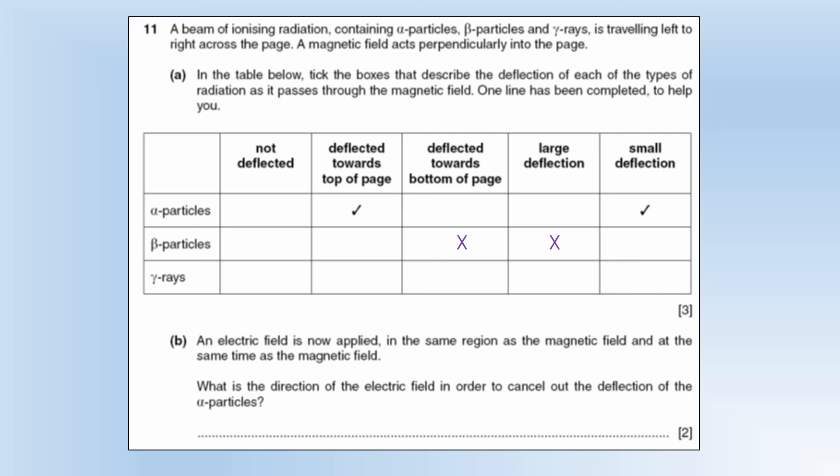Beta particles are going to go the opposite direction because they have opposite charge. And they're going to get a large deflection because their mass is very small. And then finally, gamma rays are not going to be affected because they're neutral. So they're not affected by magnetic fields.